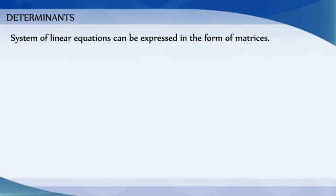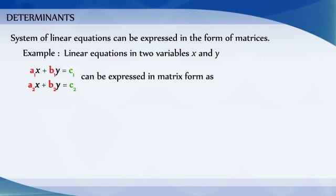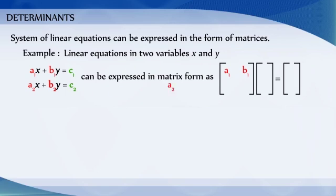We learnt that a system of linear equations can be expressed in the form of matrices. For example, linear equations in two variables x and y, say a1x plus b1y is equal to c1 and a2x plus b2y is equal to c2, can be expressed in matrix form as matrix [a1, b1; a2, b2] into matrix [x; y] is equal to matrix [c1; c2].